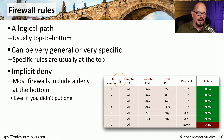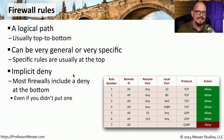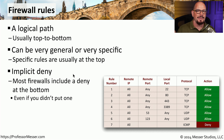With most firewalls, if you get all the way through the rule base and none of those rules are matching the data that's flowing through the firewall, that data is automatically denied. We refer to this as an implicit deny. Although there is not a specific rule denying that traffic, the lack of any other rule matching that traffic means that we implicitly deny that traffic.